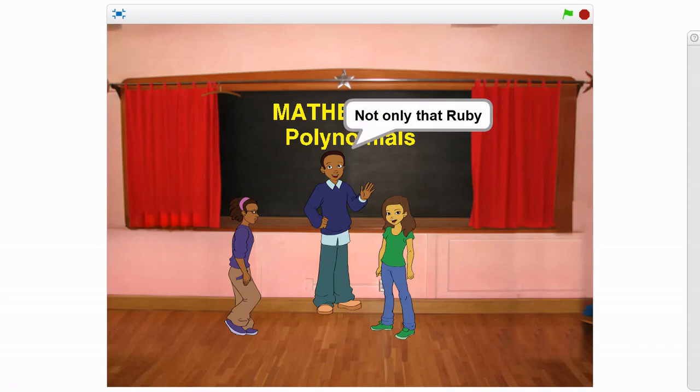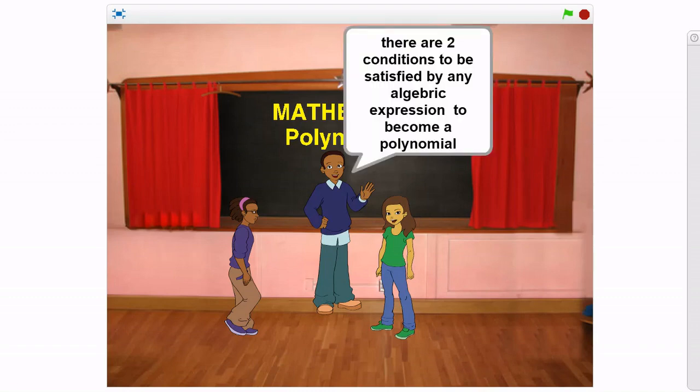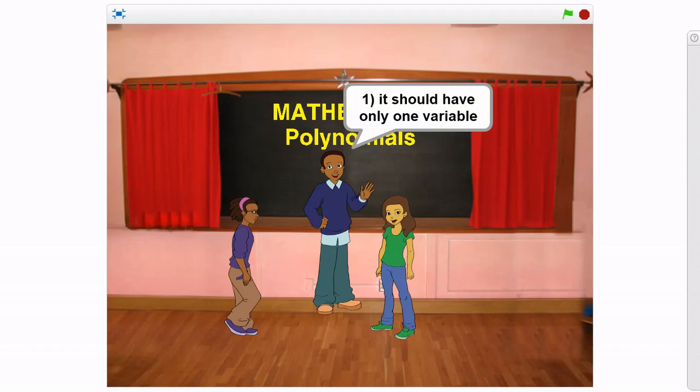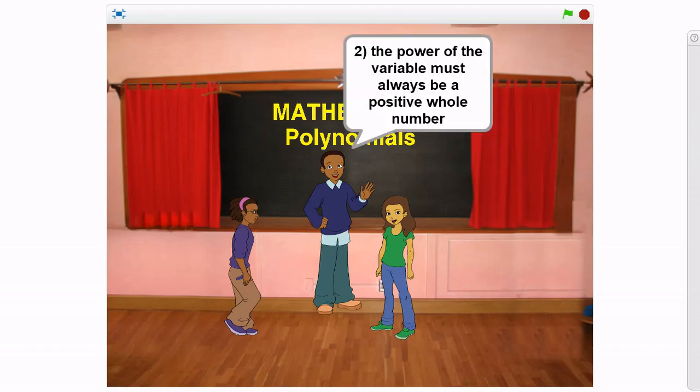Not only that, Ruby. There are two conditions to be satisfied by any algebraic expression to become a polynomial. The first one is that you should have only one variable. And the second one is the power of the variable must always be a positive whole number.